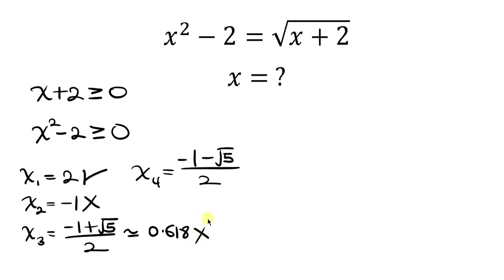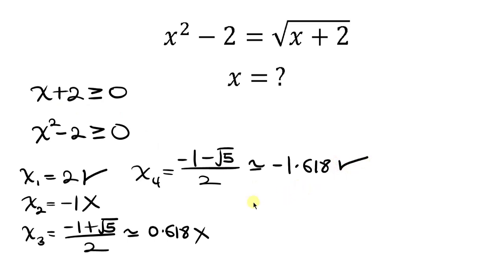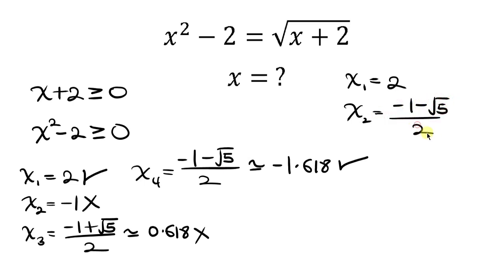For the fourth root, approximately negative 1.618: squaring it gives a value bigger than 2, so negative 1.618 squared minus 2 is positive — that's a tick. And negative 1.618 plus 2 is also positive — that's a tick. So we have two valid solutions: x equals 2, and x equals negative 1 minus the square root of 5, all over 2.